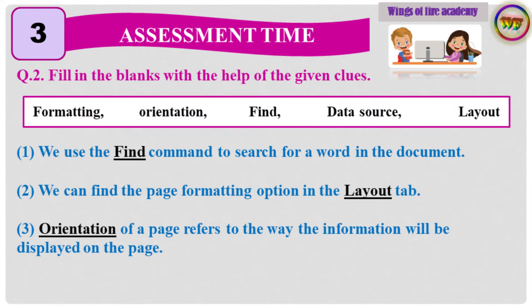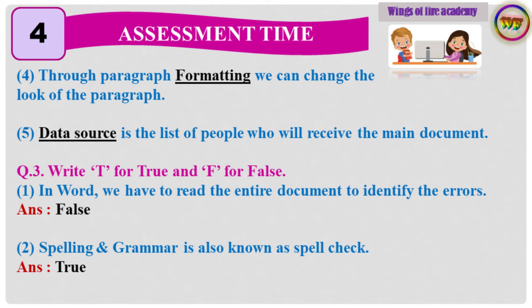Question 2: Fill in the blanks with the help of the given clues. 1. We use the Find command to search for a word in the document. 2. We can find the page formatting option in the Layout tab. 3. Orientation of a page refers to the way the information will be displayed on the page. 4. Through paragraph formatting, we can change the look of the paragraph. 5. Data source is the list of people who will receive the main document.